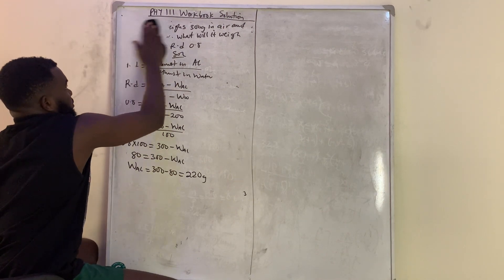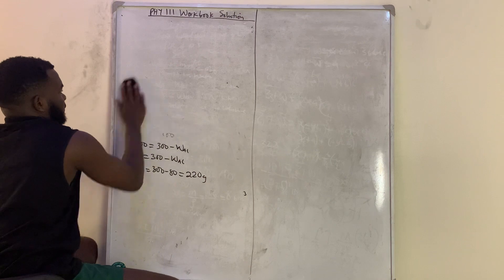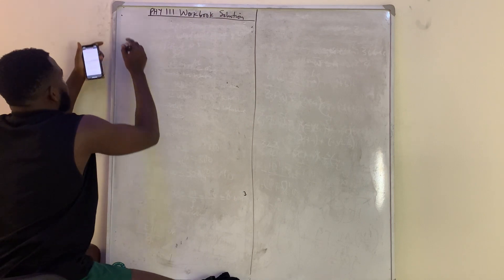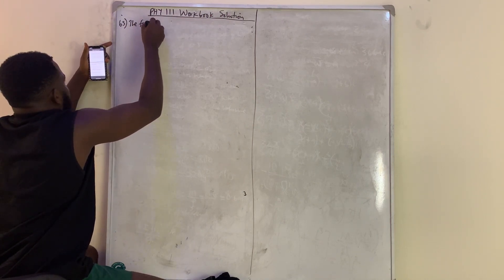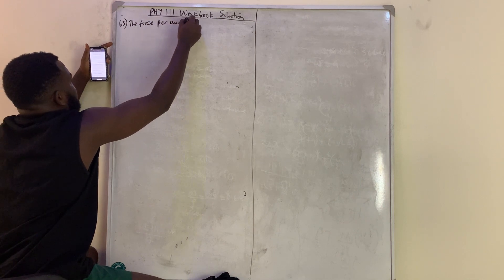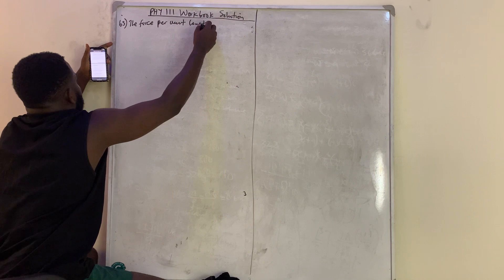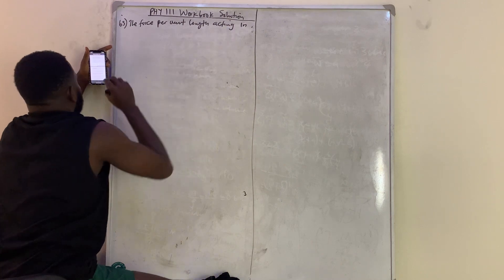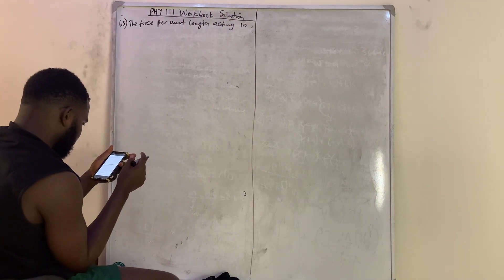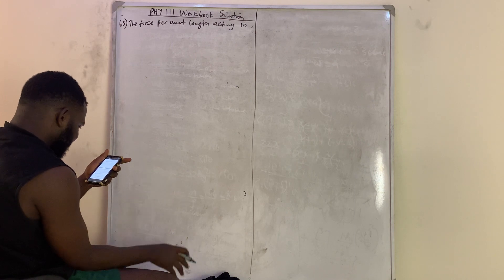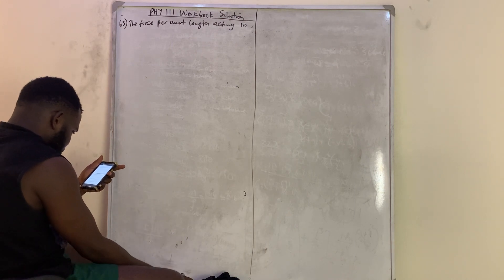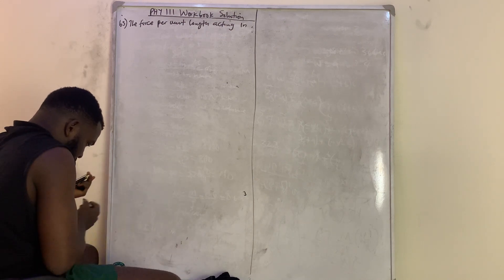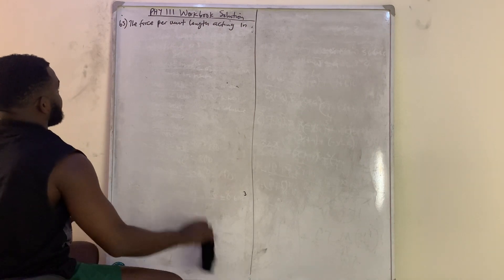Question number 65: The force per unit length acting on the surface of a liquid at right angles to one side of a line drawn in the surface is called surface tension. So the answer is simply surface tension.